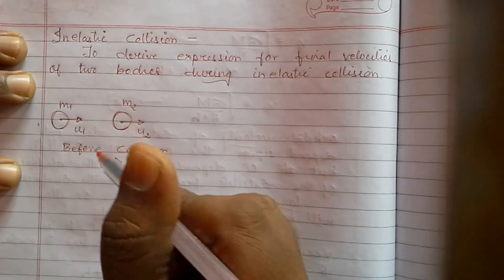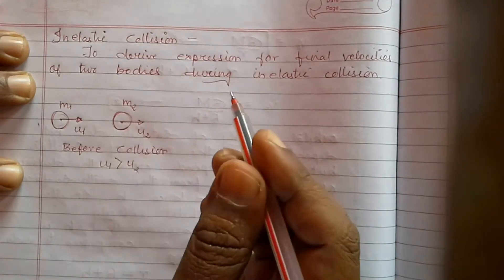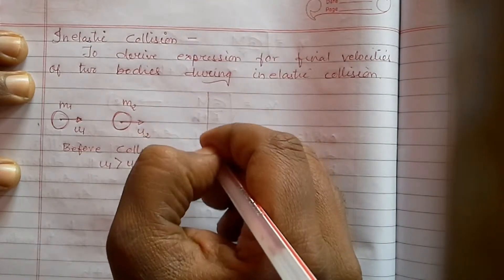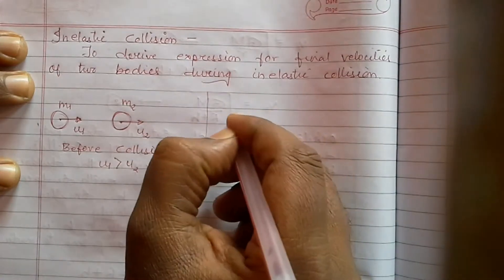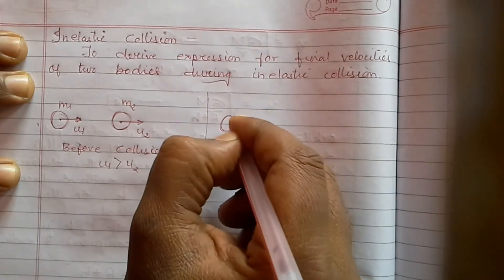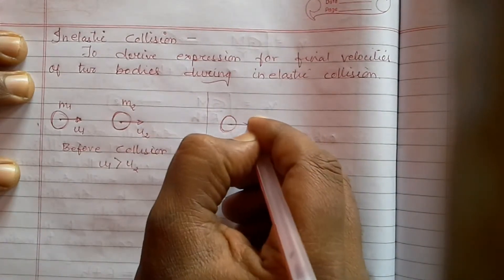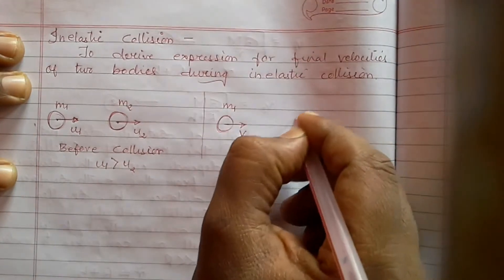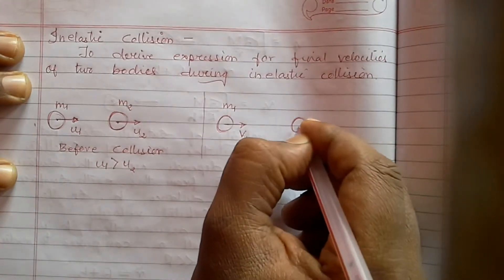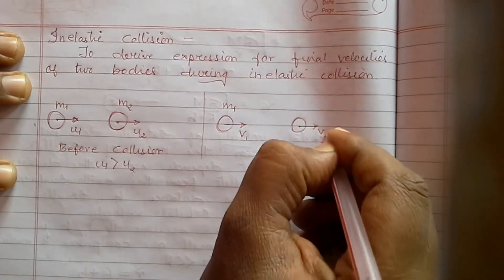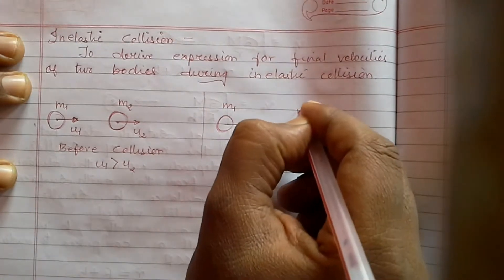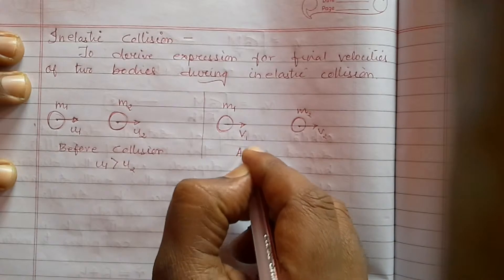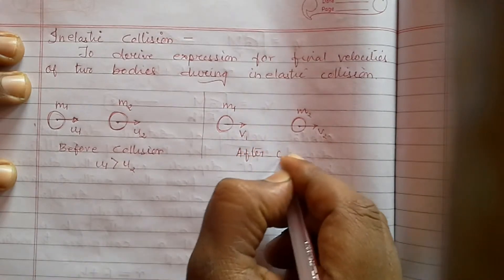Then after some time they will collide, and after collision their velocities will change. Let us say mass m1 is moving with velocity v1 and mass m2 is moving with velocity v2. This is after collision.